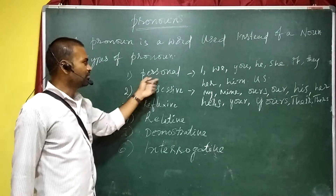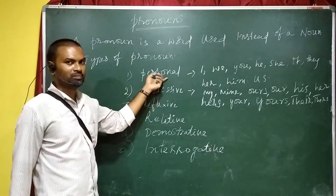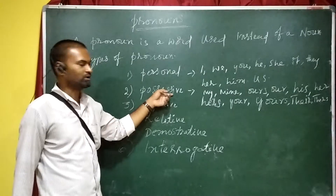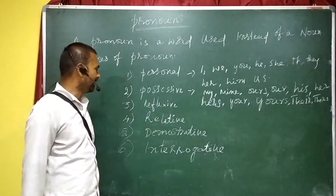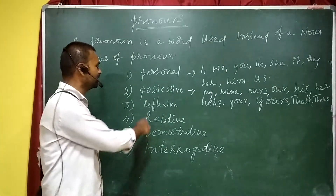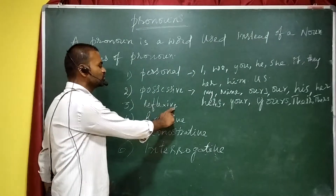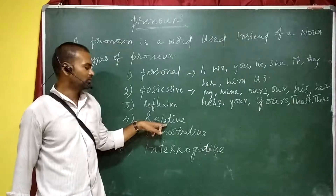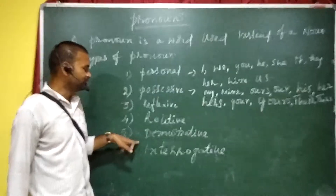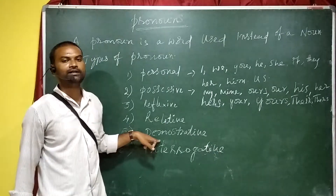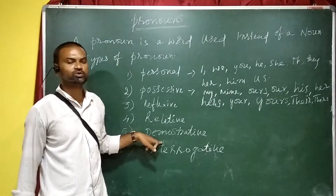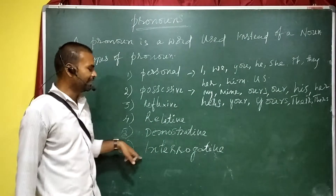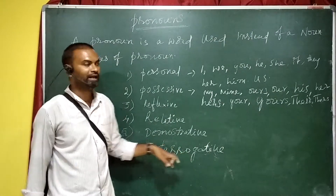First one: personal pronoun. Second one: possessive pronoun. Third one: reflexive pronoun. Fourth one: relative pronoun. Fifth one: demonstrative pronoun. And sixth one: interrogative pronoun.